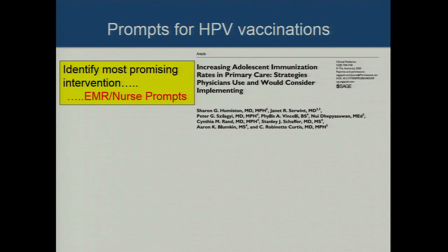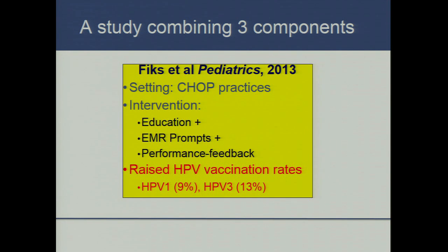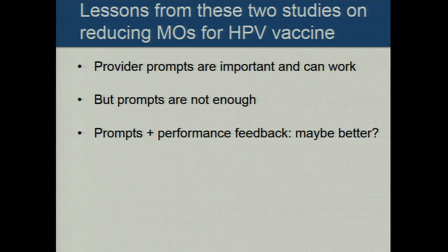Missed opportunities represent potentially low-hanging fruit. How can you eliminate them? You can use prompts — given by nurses or electronic medical records. We did a study asking physicians in two large national research networks to identify the most effective intervention to improve HPV vaccination rates. They chose prompts only. But when we did a randomized clinical trial of prompts only, we found only a small impact — not as big as we wanted. Alex Fix at CHOP then studied a bundle: provider education on communication, EMR prompts, and performance feedback to providers about their missed opportunities. He found a much bigger bump in HPV vaccination rates.